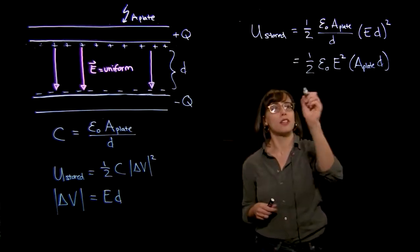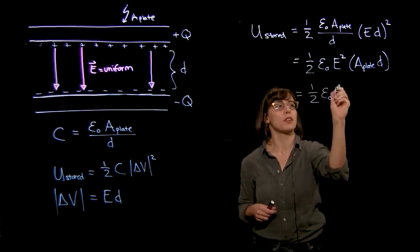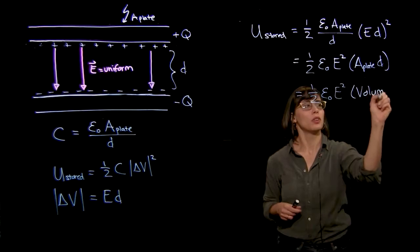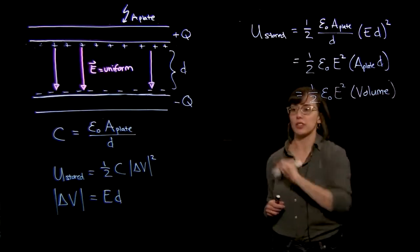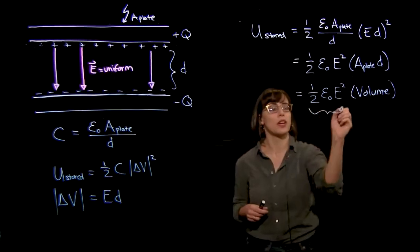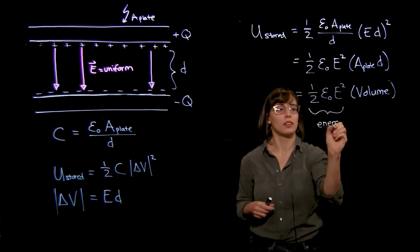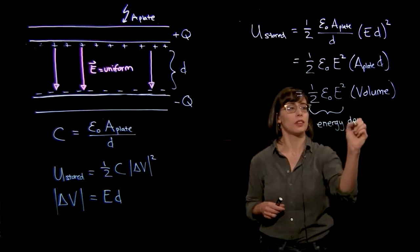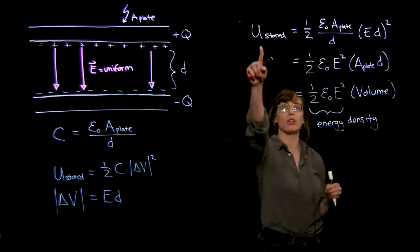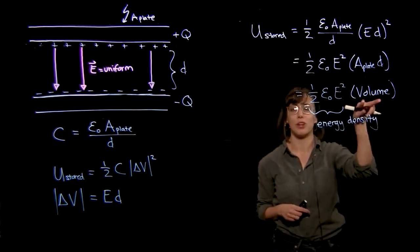That allows us to think of this then, so if I can rewrite one-half epsilon zero e squared times the volume where the electric field is non-zero, that allows me to define this as what we're going to call an energy density. The reason for that is to get the total energy, you multiply the energy density, or energy per volume, times the volume.